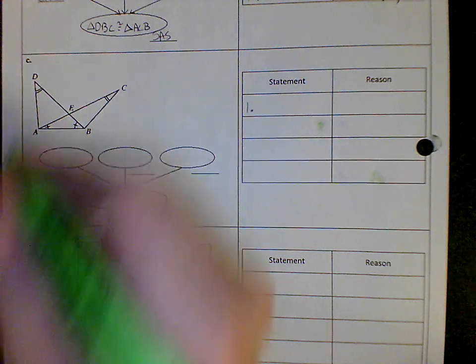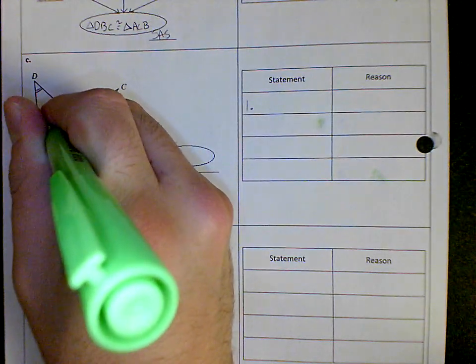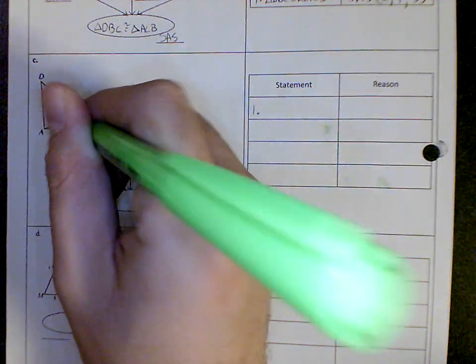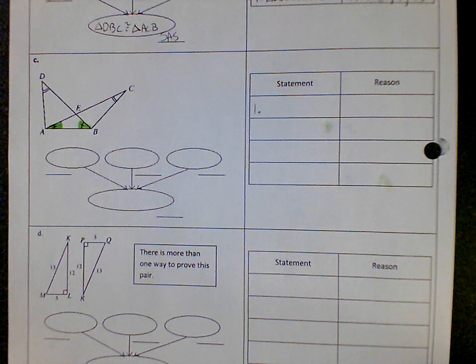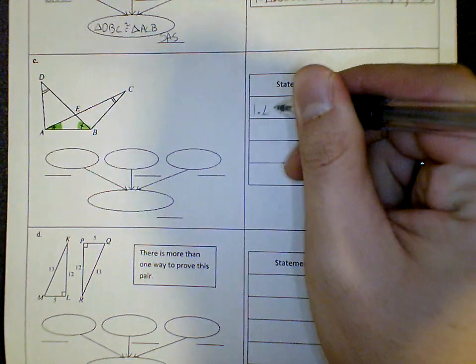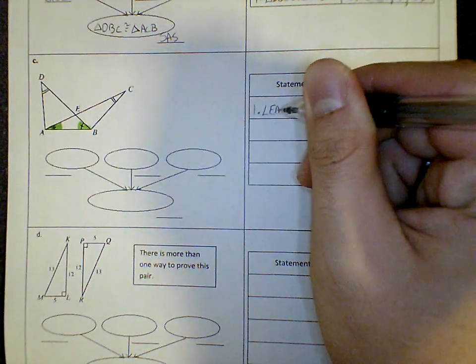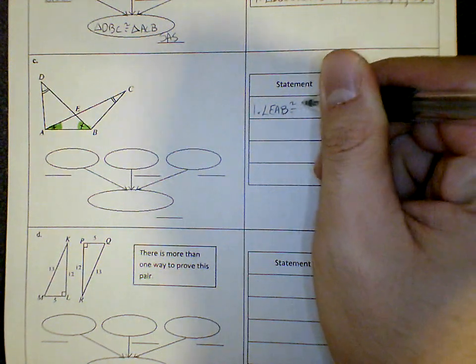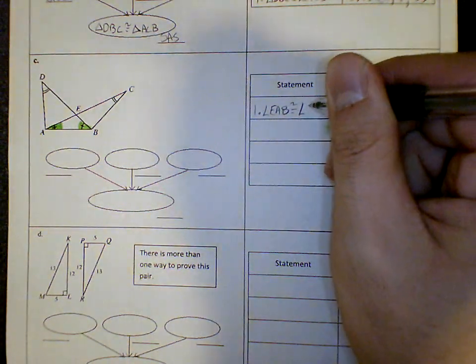So let's start with, I see that these two angles are congruent. So angle EAB is congruent to angle EBA.